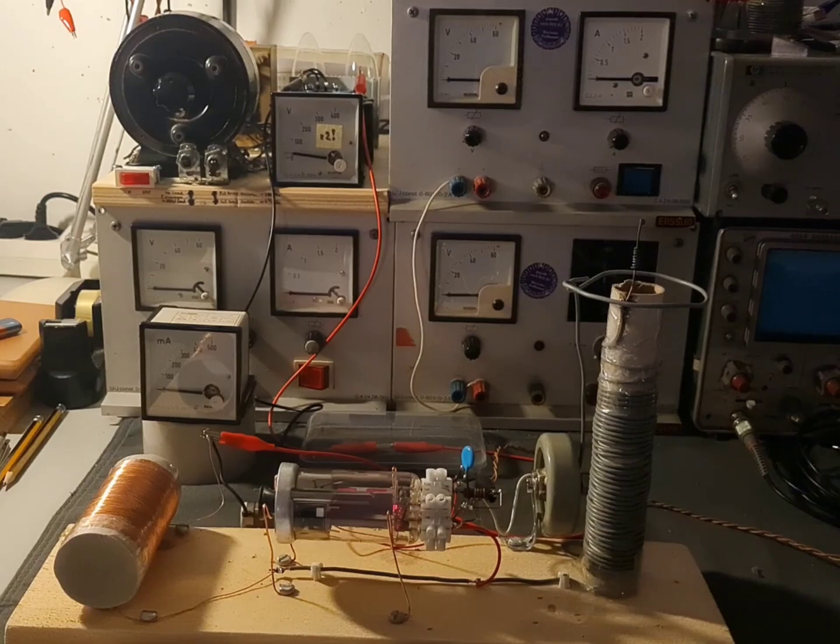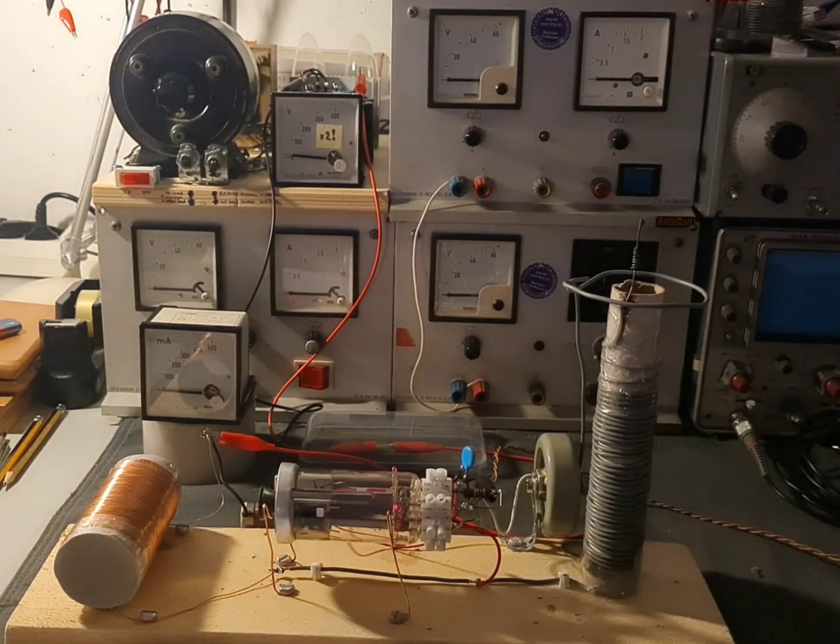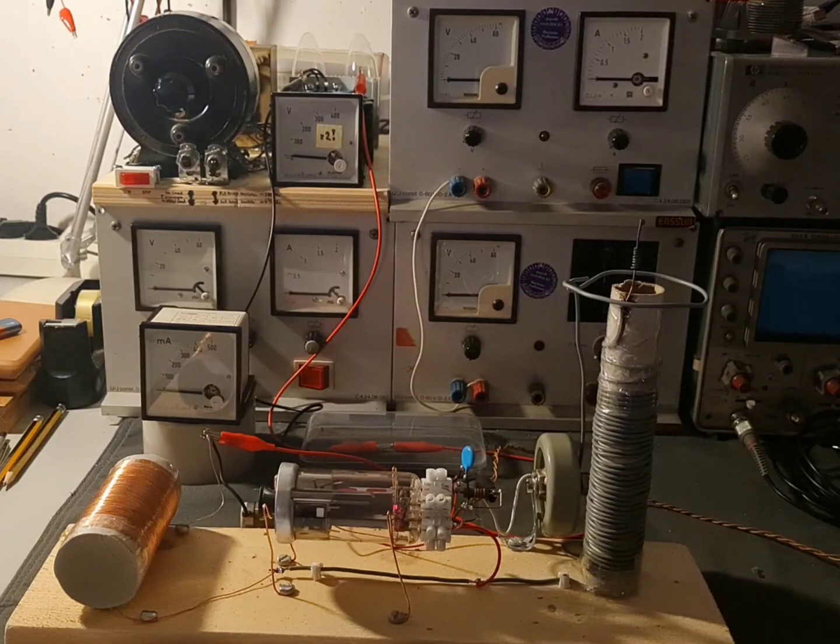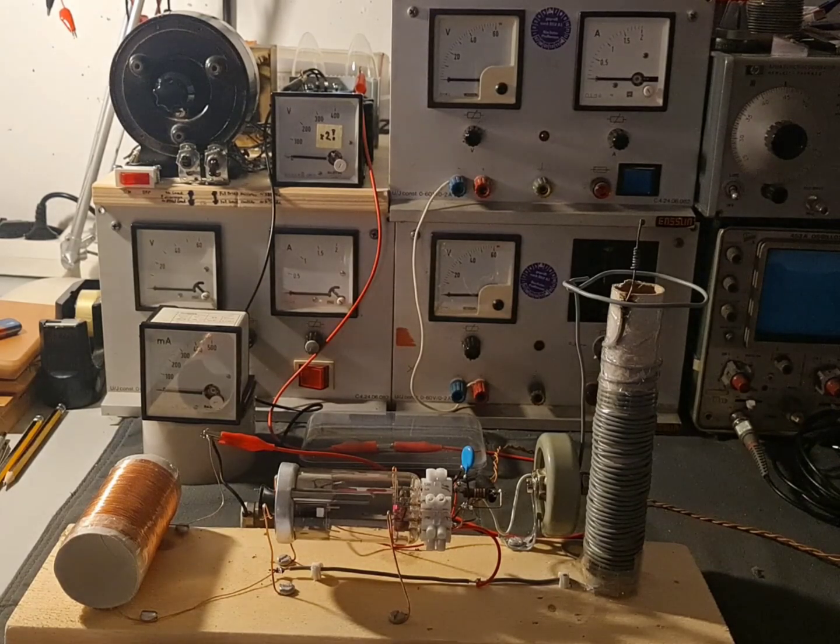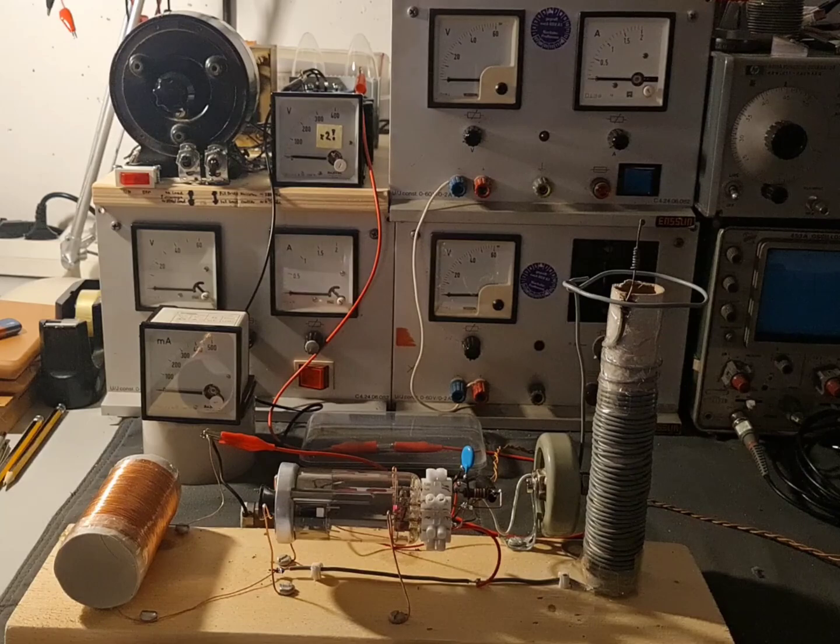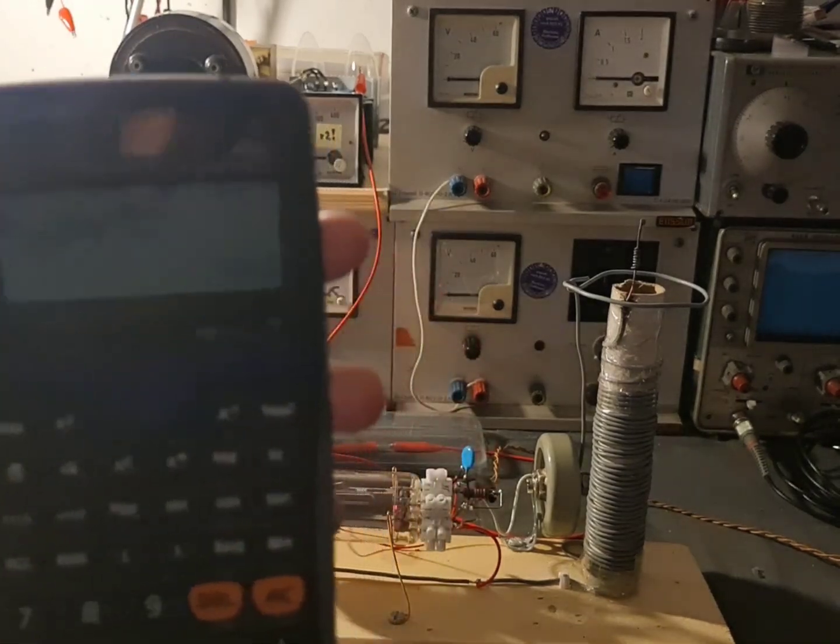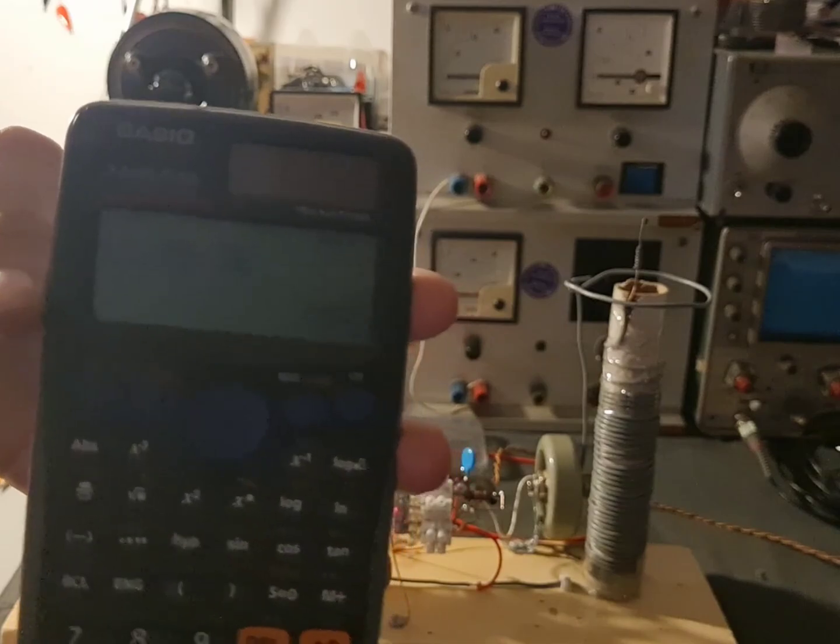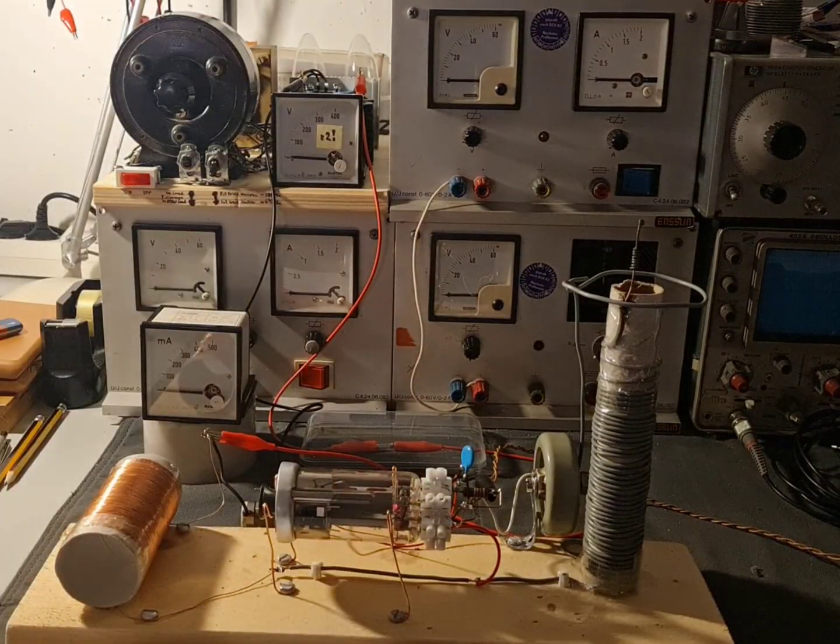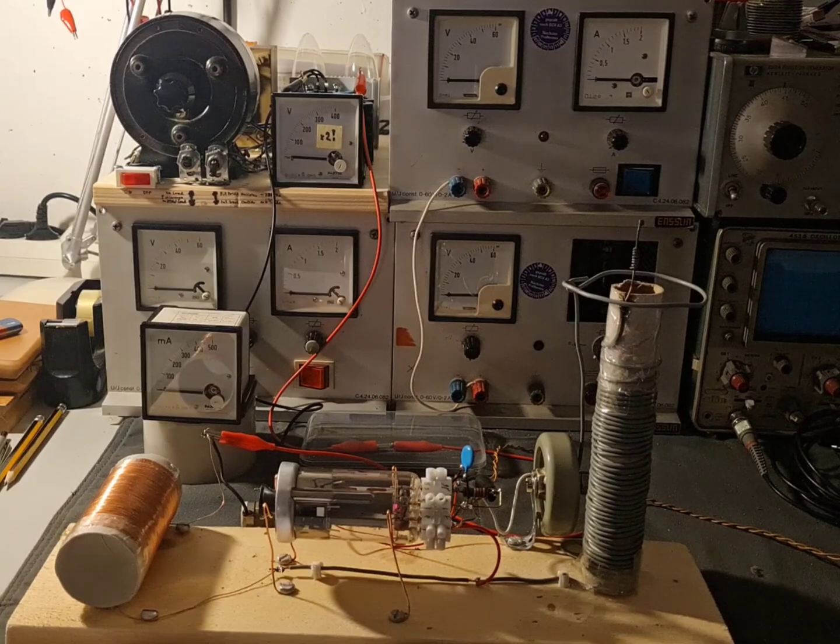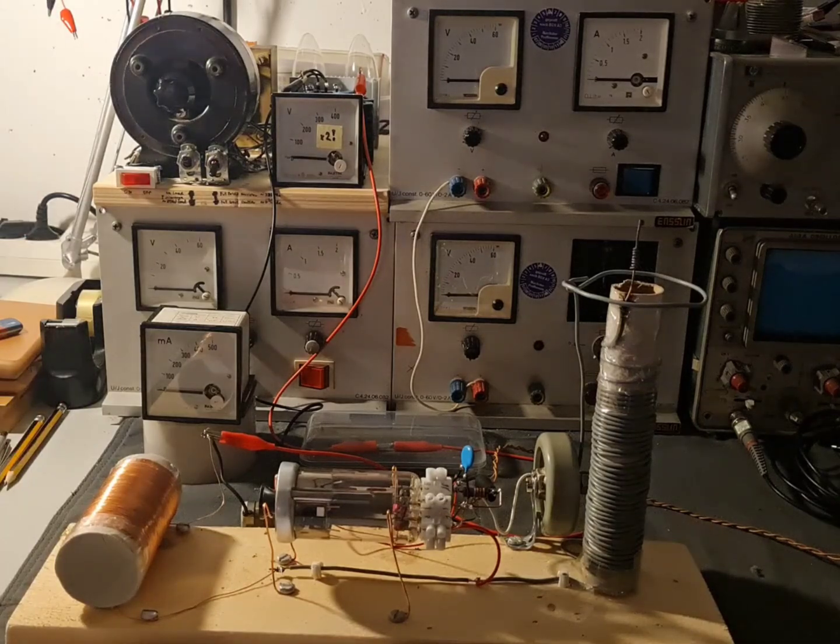The current drawn by the tube was 275 milliampers times 700 volts. The total dissipation, the total use of the system was around, I'm not sure if you can see it, it's around 192.5 watts. So nearly 200 watts for the system.